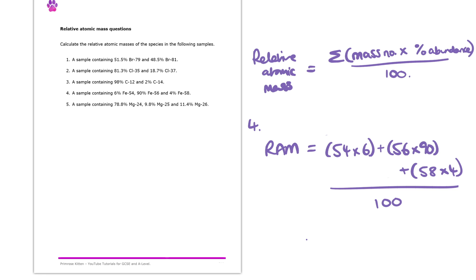And then if we put that into the calculator I end up making it an answer of 55.96 and that there is the relative atomic mass of this particular sample of iron.